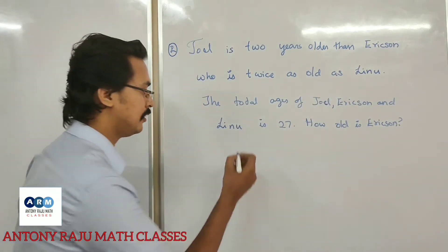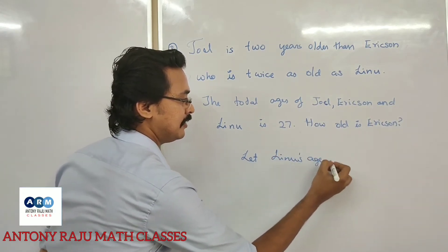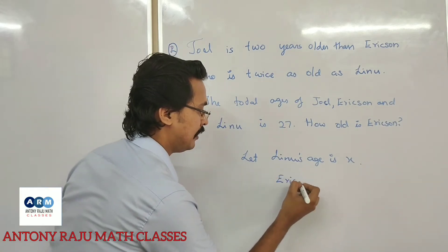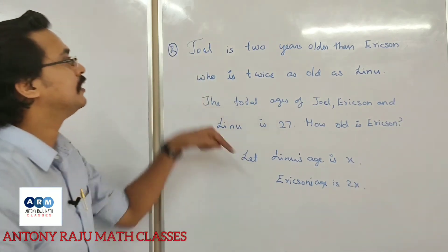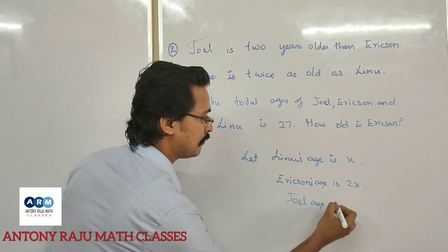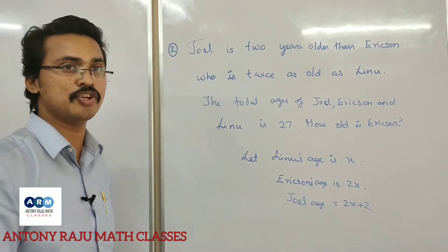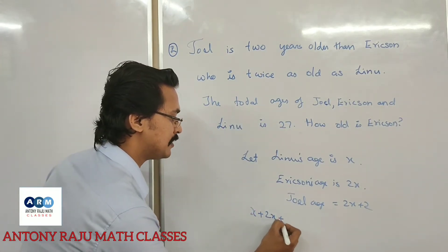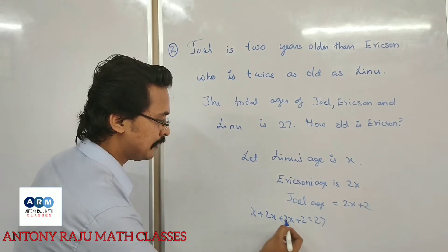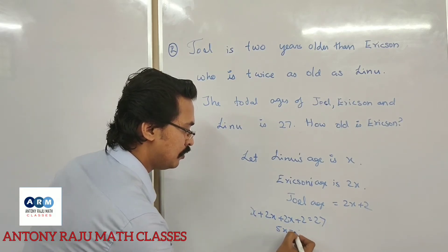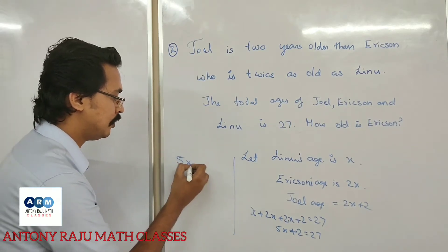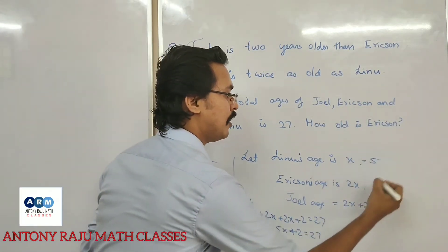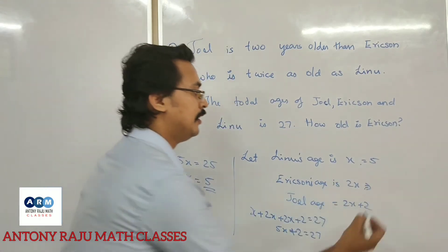Let Linum's age be x. Since Erickson is twice as old as Linum, Erickson's age is 2x. Joel is 2 years older than Erickson, so Joel's age is 2x plus 2. The sum: x plus 2x plus 2x plus 2 is equal to 27. That gives 5x plus 2 equals 27, so 5x equals 25, x equals 5.